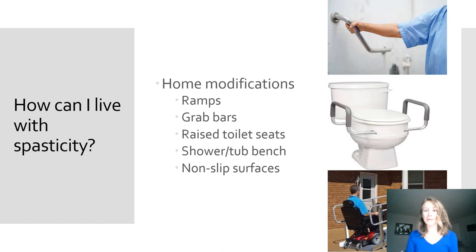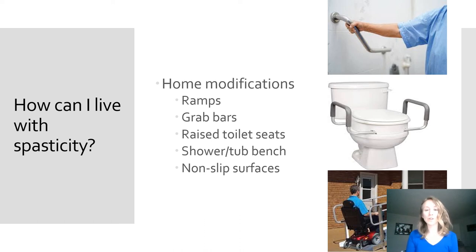When you are living with spasticity, there are some home modifications that can make your ability to do daily activities easier. Some of these include ramps rather than using stairs, grab bars especially when getting in and out of bed or within the bathroom, and a raised toilet seat that makes moving on and off the toilet easier. You could also use a shower or tub bench when bathing, which can help reduce fatigue and prevent falls. Non-slip surfaces can also be used — placed under rugs and carpets, or as adhesive strips at the bottom of the tub.